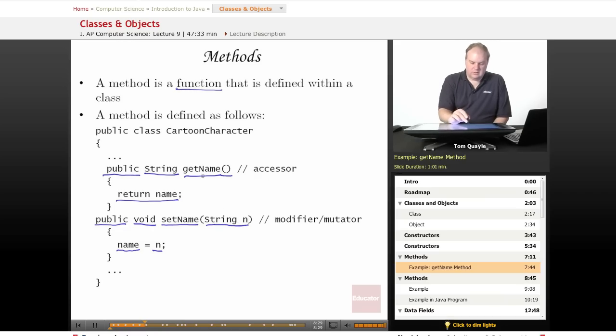I have some notes out here that this getName method is known as an accessor, and the setName is known as either a modifier or a mutator. And we'll talk about those designators also later in this lesson.